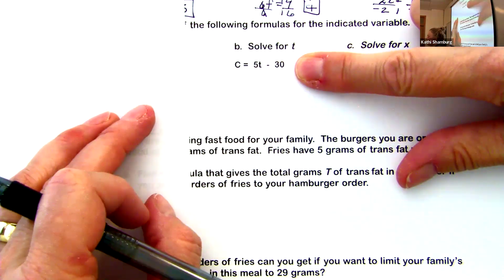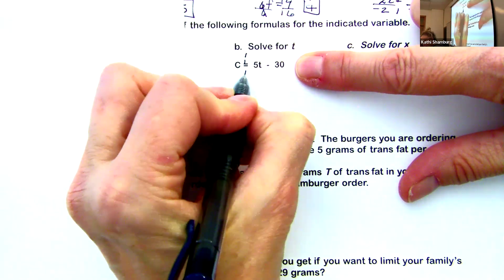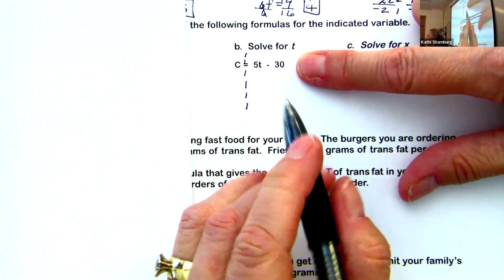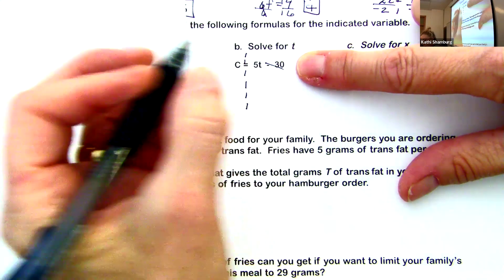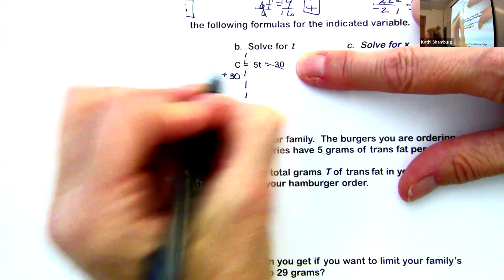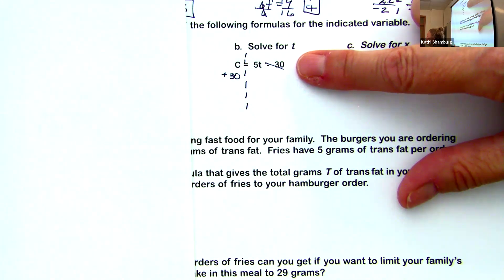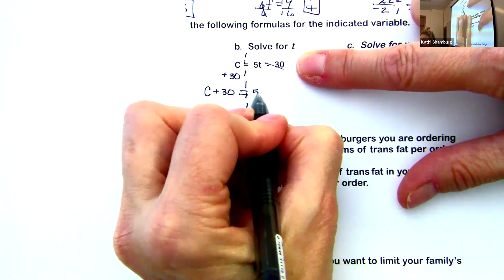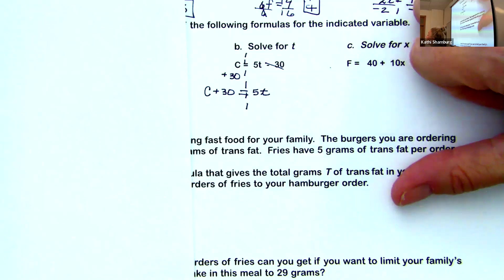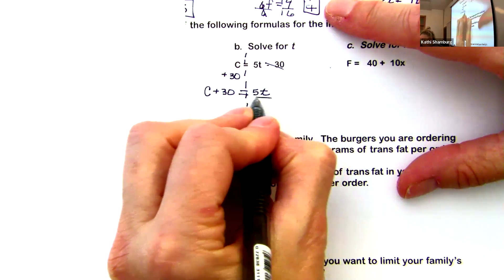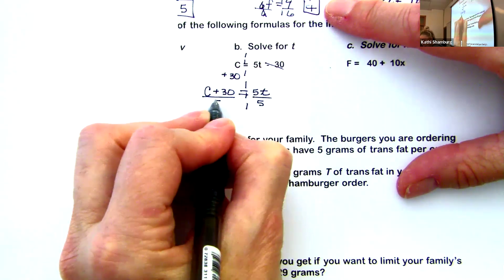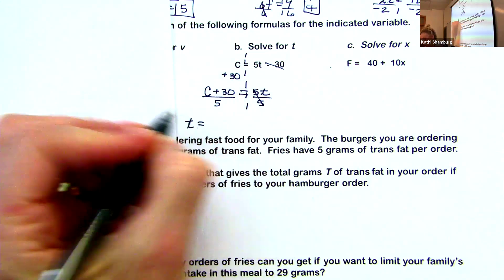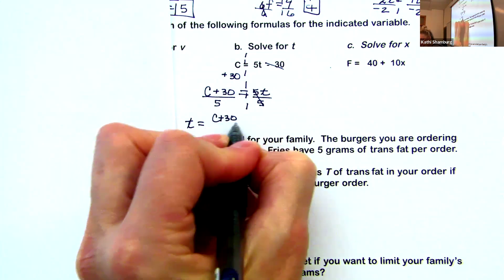This equation is currently solved for C. We're being asked to solve for T. Here's my 5T — I want to get rid of minus 30 first by adding 30. That gets rid of it on the right side; I add 30 on the left. I don't know the value of C, so I can't simplify C plus 30 — I just leave it as C plus 30. On the right side I'm left with 5T. I divide both sides by 5, and I'm left with T equals C plus 30 over 5.